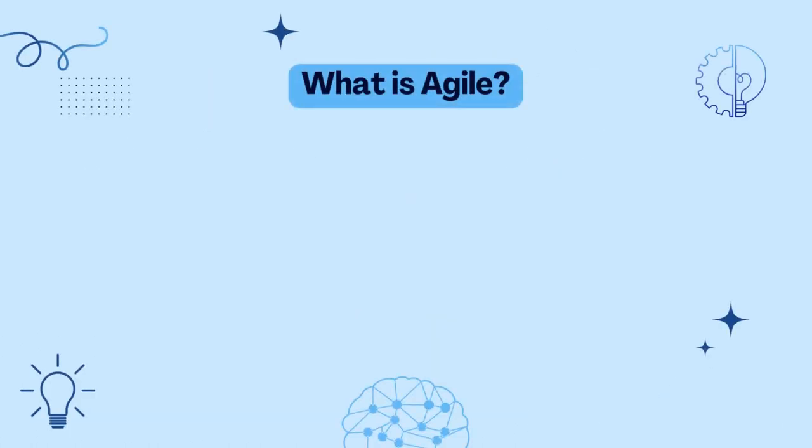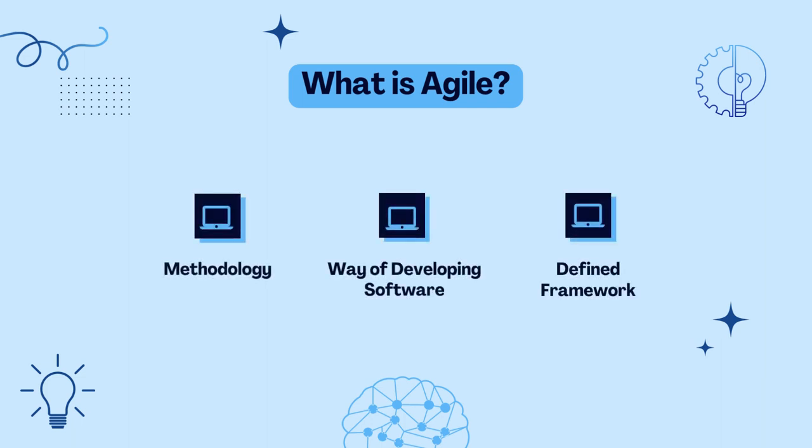Nowadays, Agile is a buzzword across many industries, particularly in the software industry. When you think of Agile, you may think of popular frameworks and methodologies such as Kanban and Scrum.